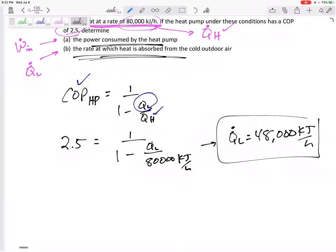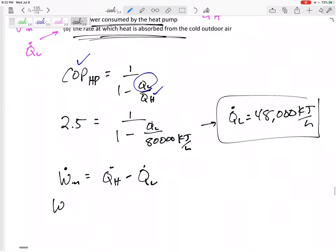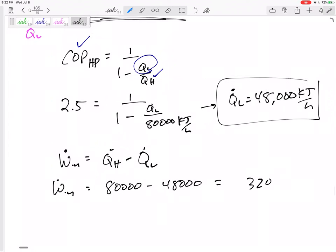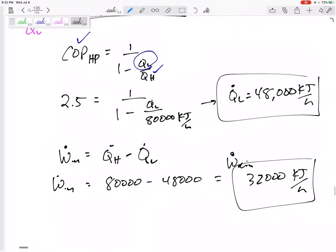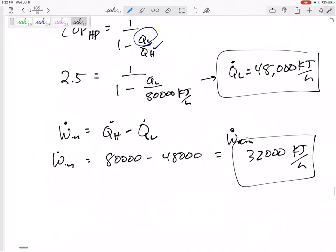And then I need to find the power, the W net in. Well, that's Q_H minus Q_L. I have both of those now. W net in, 80,000 minus 48,000, 32,000 kilojoules per hour. That would be the W net in, the power in.